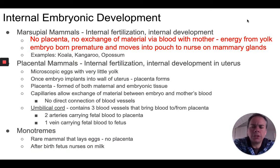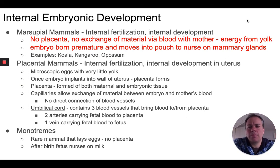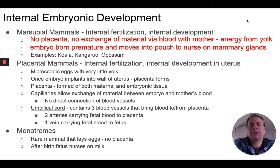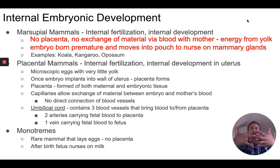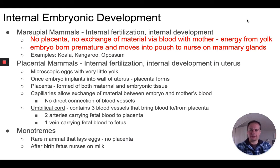Once the embryo implants into the wall of the uterus, a structure called the placenta forms. The placenta is an organ that has tissue from both the mother and from the embryo, and this is where materials are exchanged between the mother's blood and the embryo's blood. It's important to note — a common misconception — that the mother's blood does not actually go into the embryo. In the placenta, the blood vessels from the mother are right next to the blood vessels from the embryo with capillaries adjacent to each other, and materials move back and forth through diffusion but the blood doesn't mix.